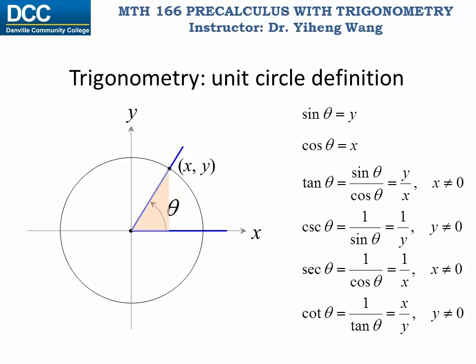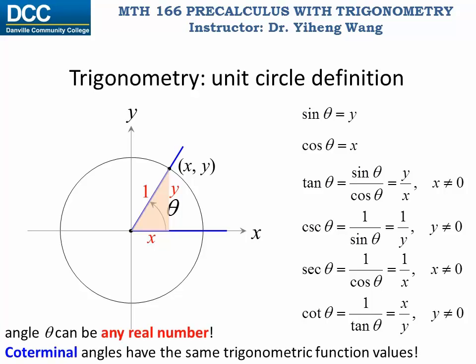If you draw a right triangle here, you will see that it has a hypotenuse of one and the other two sides with lengths of x and y. Therefore, if you compare the unit circle definition to the right triangle definition, you will see that this definition does not contradict the right triangle definition.